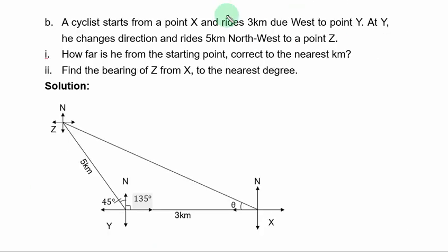Question 10b. A cyclist starts from a point S and rides 3 kilometers due west to point Y. At Y, he changes direction and rides 5 kilometers northwest to a point Z. Remember figure 1. How far is he from the starting point correct to the nearest kilometer? Remember figure 2. Find the bearing of Z from S to the nearest degree.